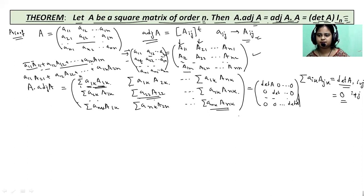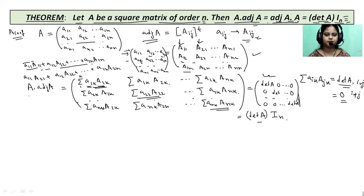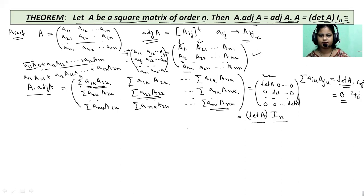Taking determinant of A out from this matrix, the remaining part is I_n. So the product of A with adjoint A gives us determinant of A times I_n.